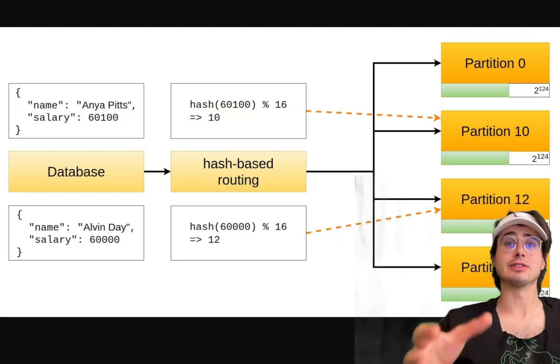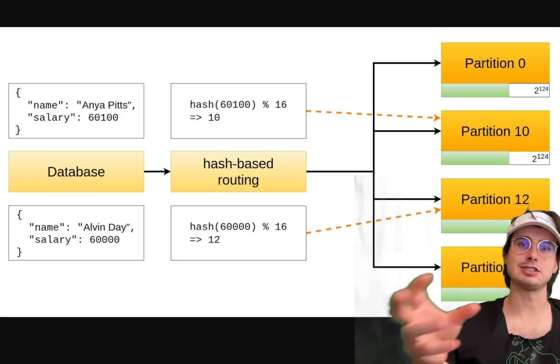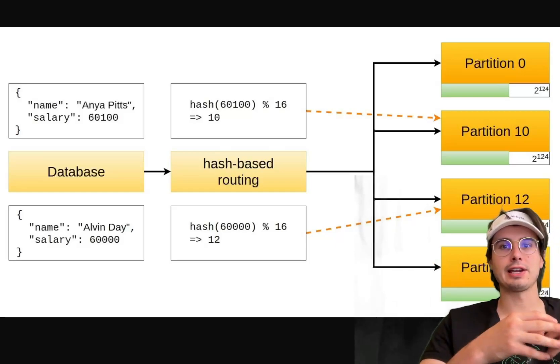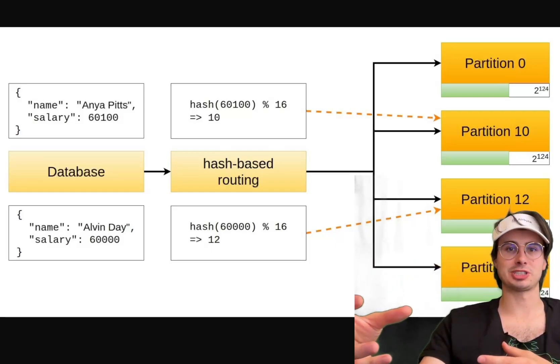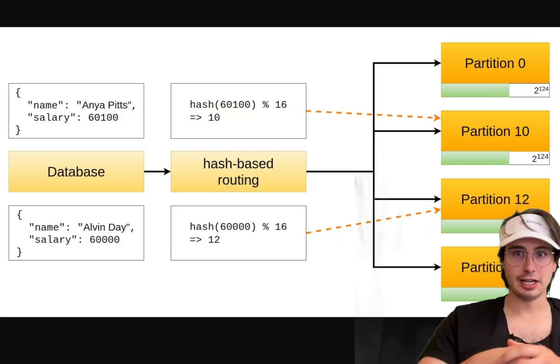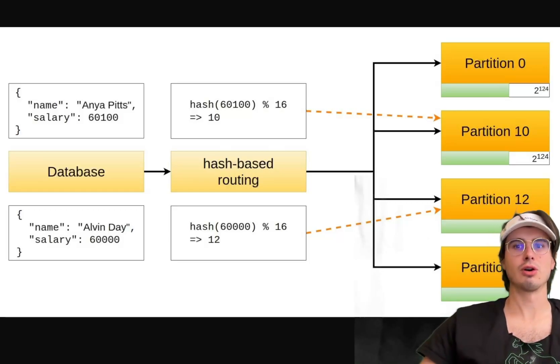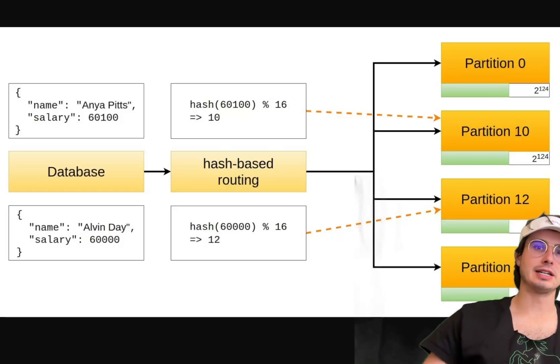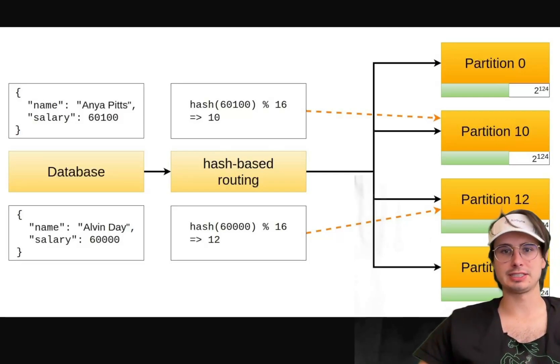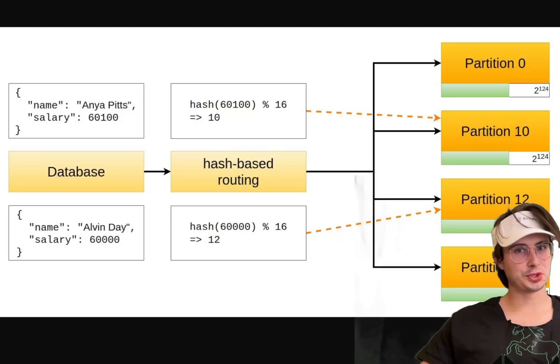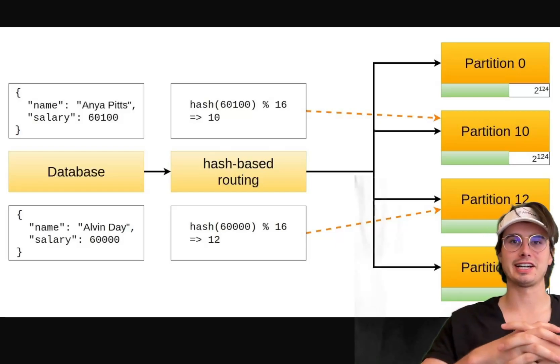You can map keys to different partition identifiers and create a more uniform distribution of data across partitions. This method helps in balancing the load and reducing hotspots but can make range queries less efficient since data is distributed non-sequentially.